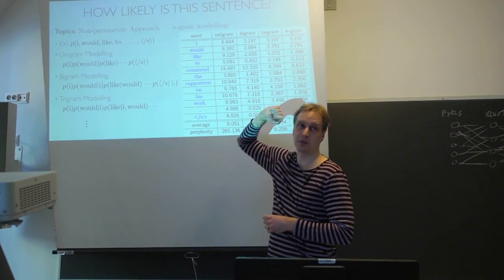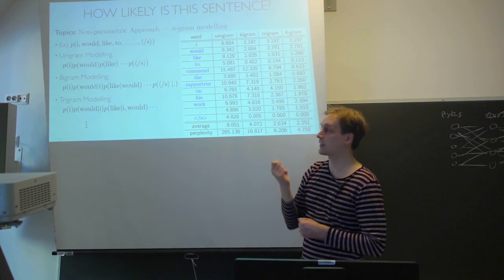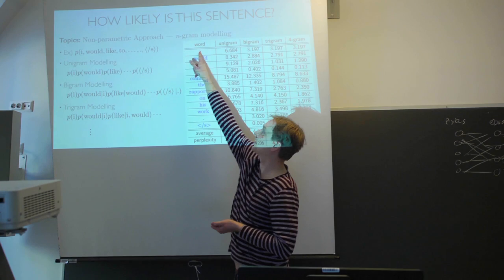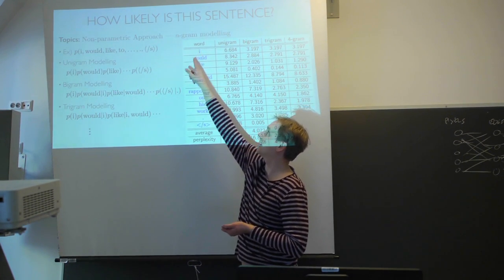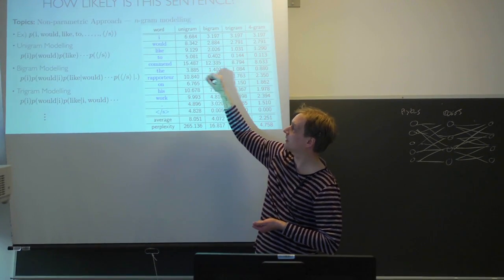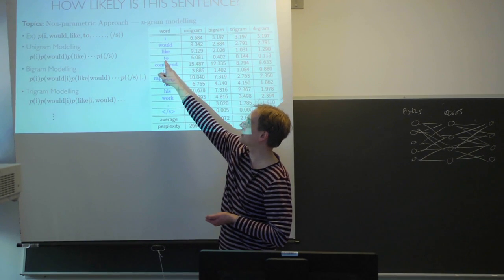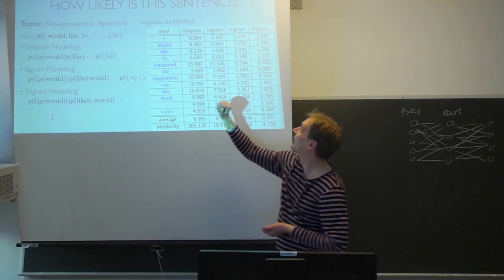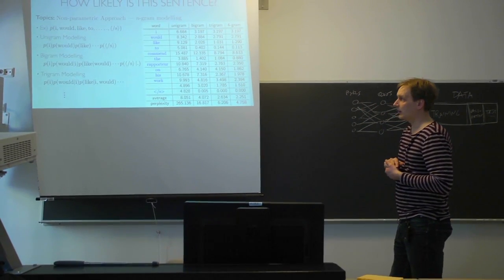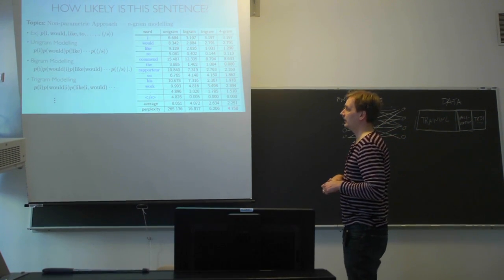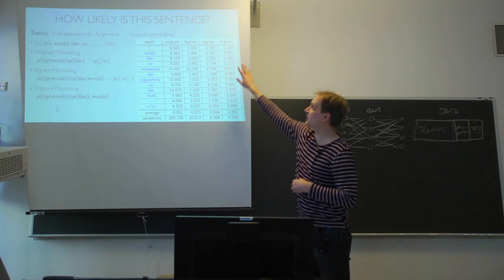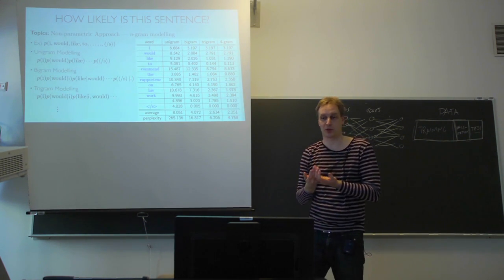And a bigram means that you would consider the context of one previous word only. So in the context of seeing I, how often the next word is would. And in a trigram, let's say, how often in the context of to comment, the next word is the. And that's a trigram model and a four-gram model. And you can see that the larger the context and the more accurate the model is.